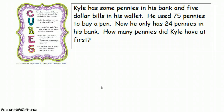Here's our problem that we're going to plan on solving today. It says Kyle has some pennies in his bank and $5 bills in his wallet. He used 75 pennies to buy a pen. Now he only has 24 pennies in his bank. How many pennies did Kyle have at first?